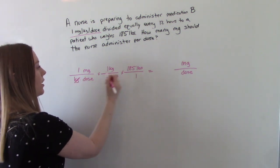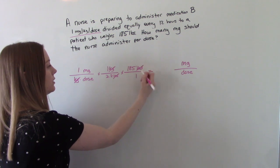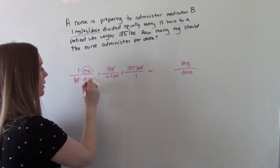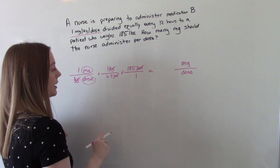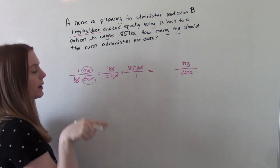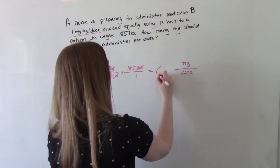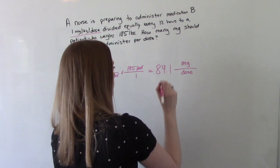So then we'll cross off our kilograms, we'll cross off our pounds. This will leave us with milligrams in our numerator and dose in our denominator. So that's correct. So then we've got to punch it in, do the math, and we get 84.1 mg.